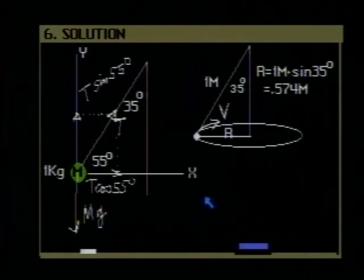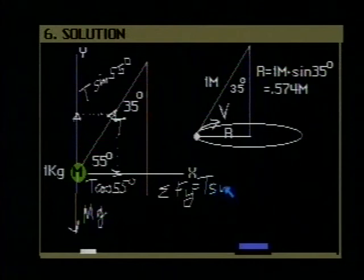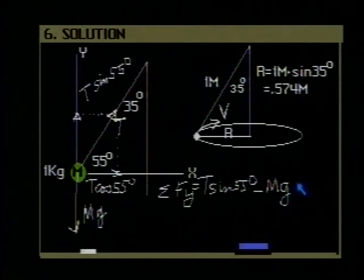So, let us write Newton's second law in the x and y directions. First of all, writing it in the y direction. The sum of the forces in the y direction is equal to, upwards T sine 55 degrees, downwards minus mg. They are all the forces in the y direction. There is no acceleration in the y direction, so they add up to 0.